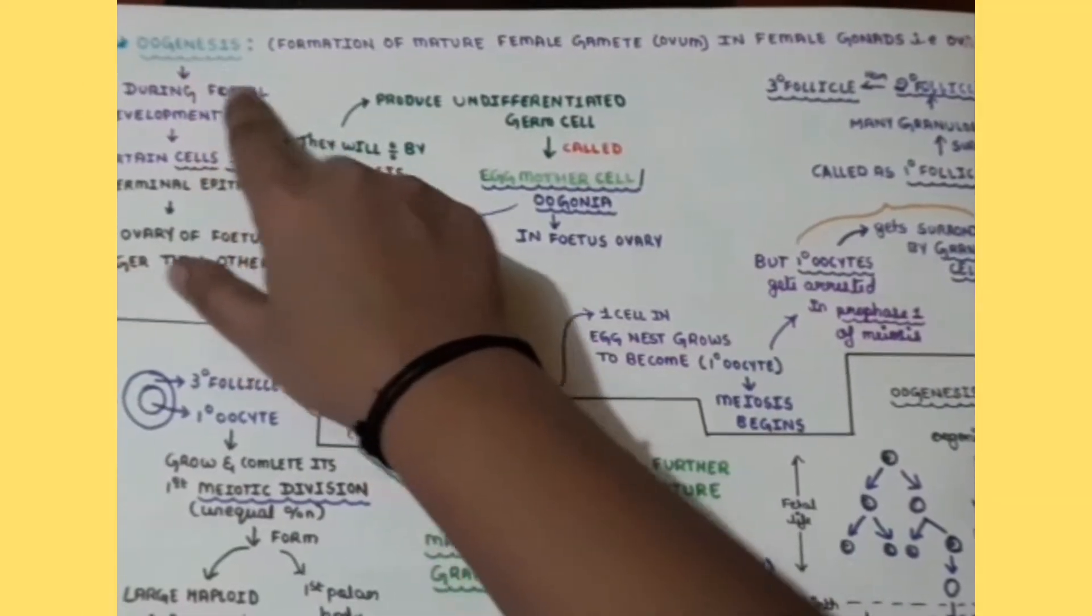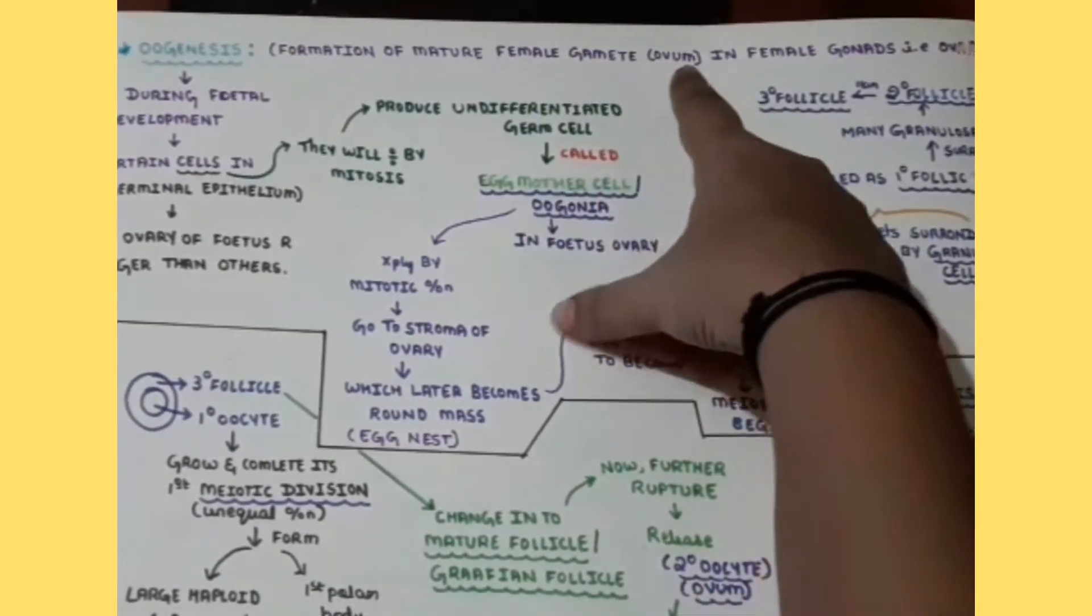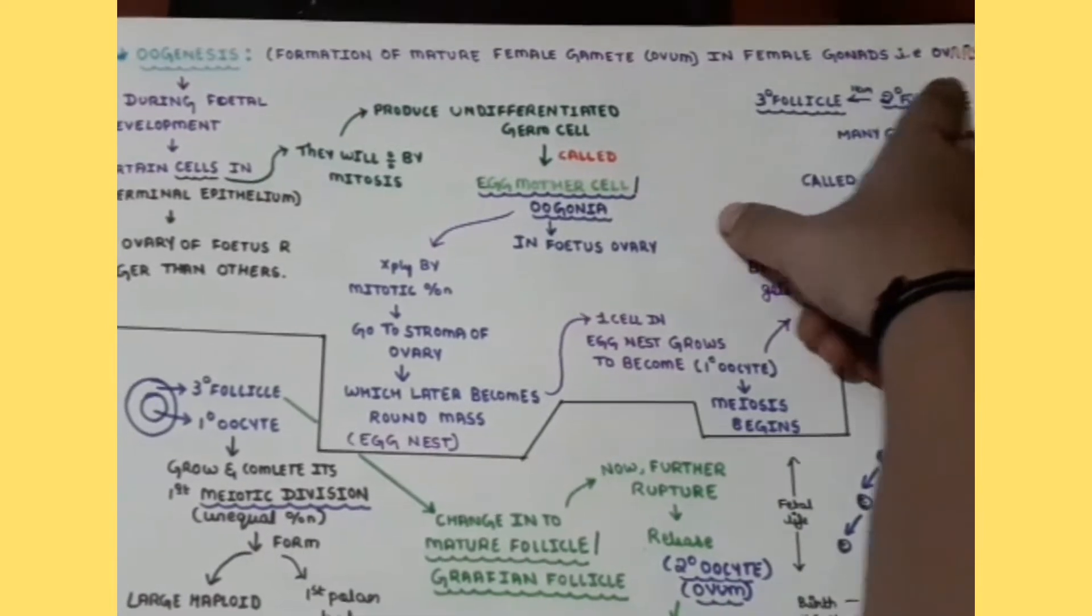So next moving on to oogenesis, it is nothing but the formation of the mature female gamete that is ovum inside the female gonad that is ovaries.